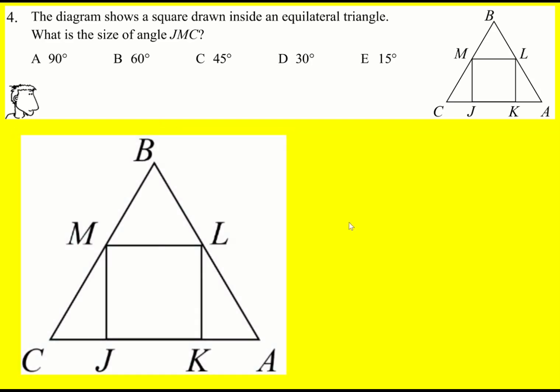A square inside an equilateral triangle. In the square, all the angles are 90 degrees, so I can add them in.